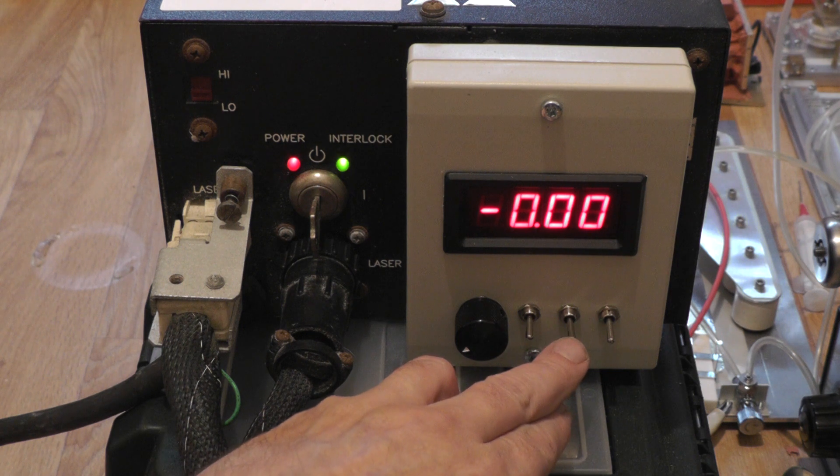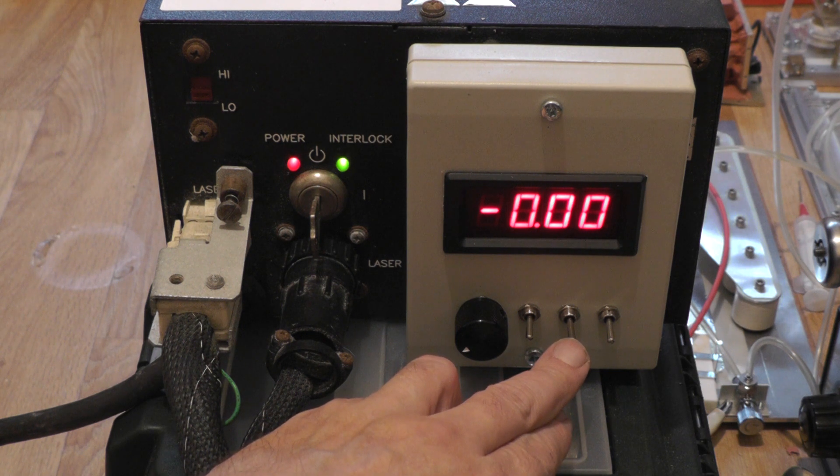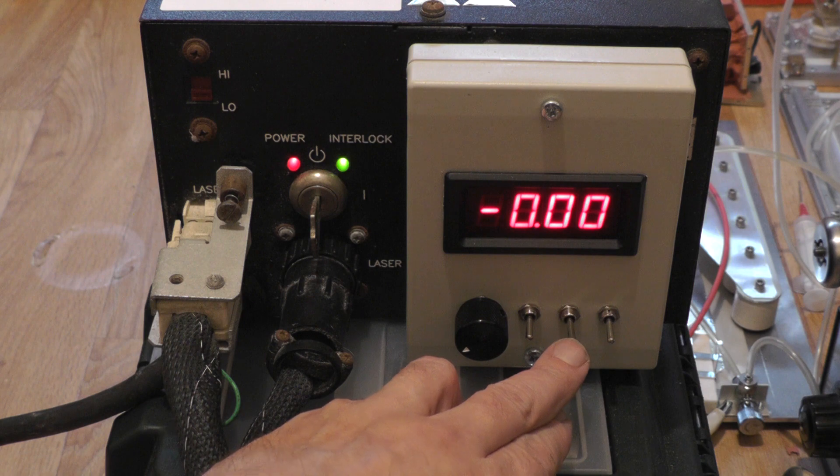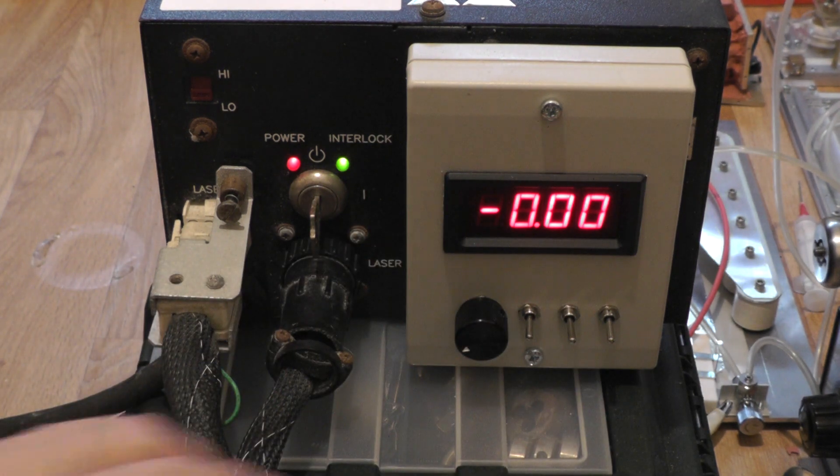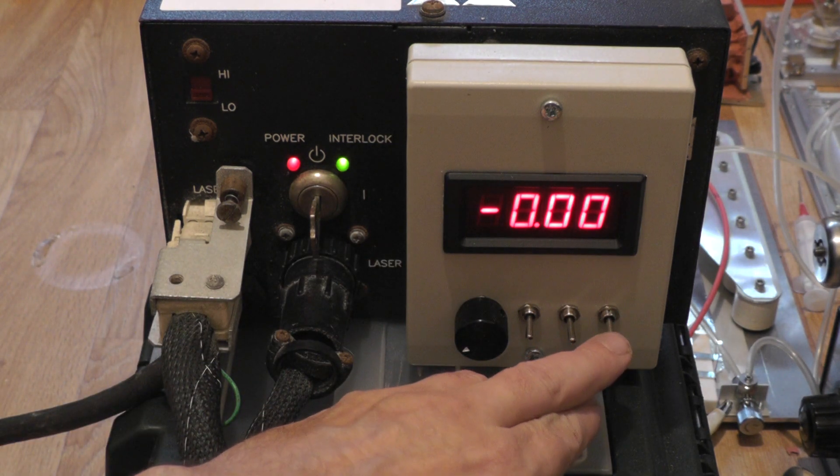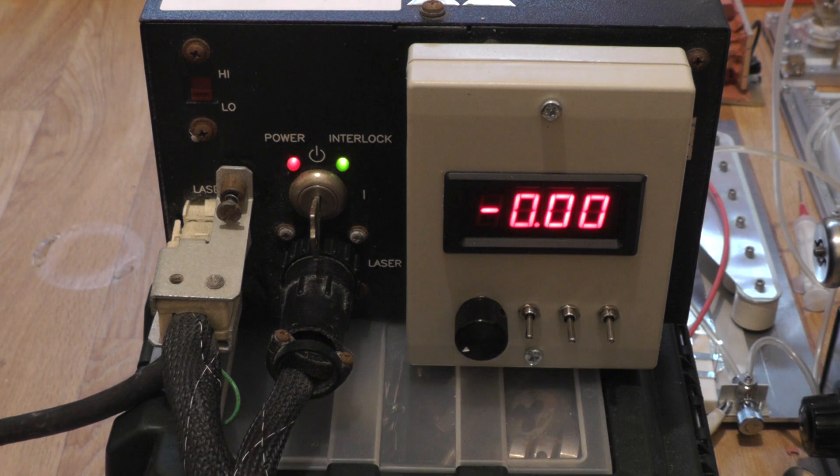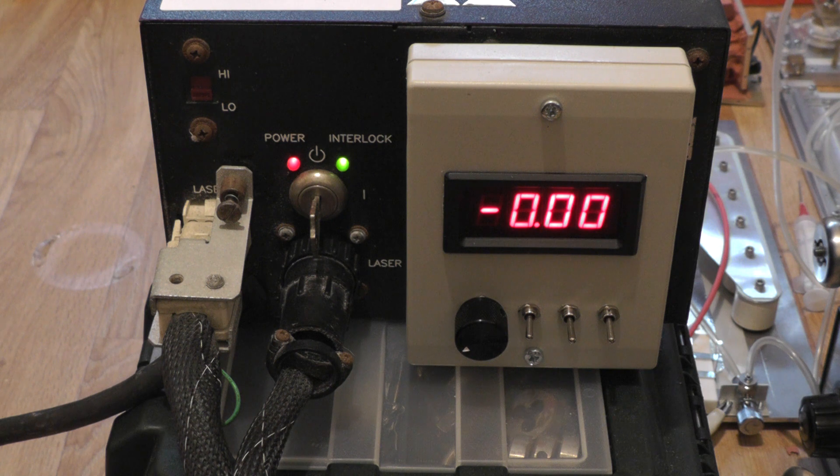The second switch tells us whether we want to control it by current of the discharge or we want light feedback. And then the third switch tells us what to display on the readout here so we can display milliamps or milliwatts. So we can display the tube current or the output power itself. Pretty straightforward. You can get the circuit diagrams for these on Sam's Laser FAQ and I'll link that down below.